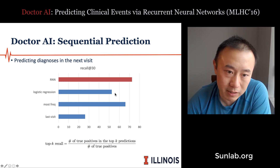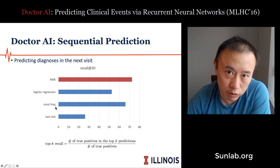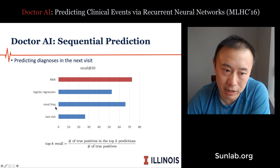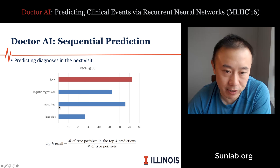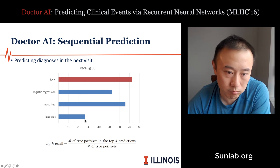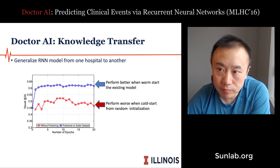Baseline methods include logistic regression, which performs much worse at around 50%. A historical frequency heuristic — predicting the most frequent diagnosis codes from the patient's history — performs at around 65%, which is not bad. Using the last visit as prediction performs poorly at only 20–30% recall.